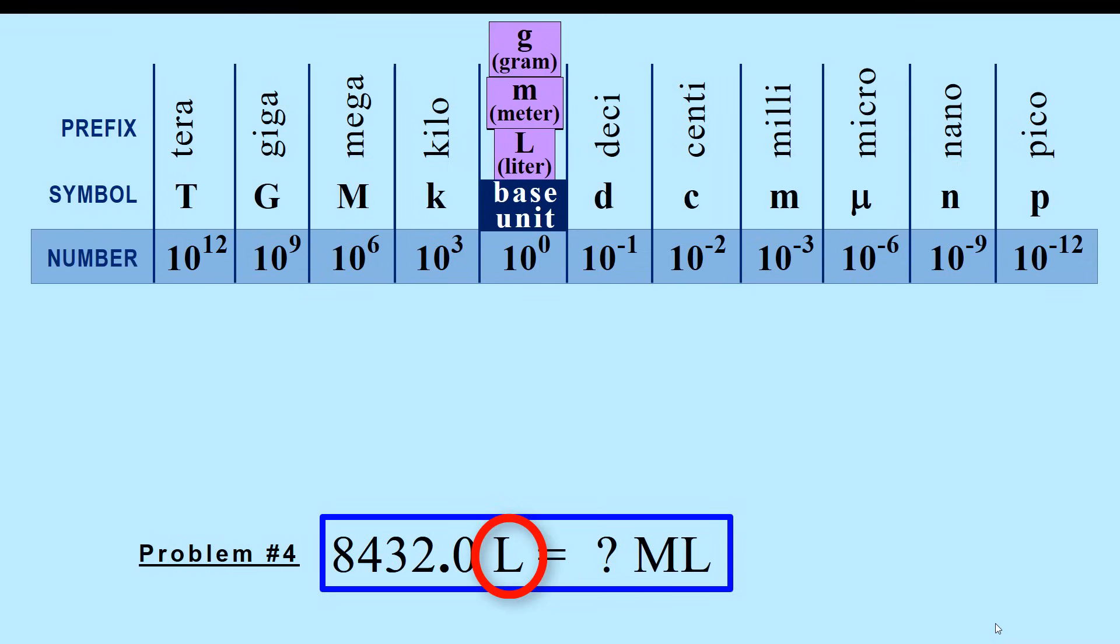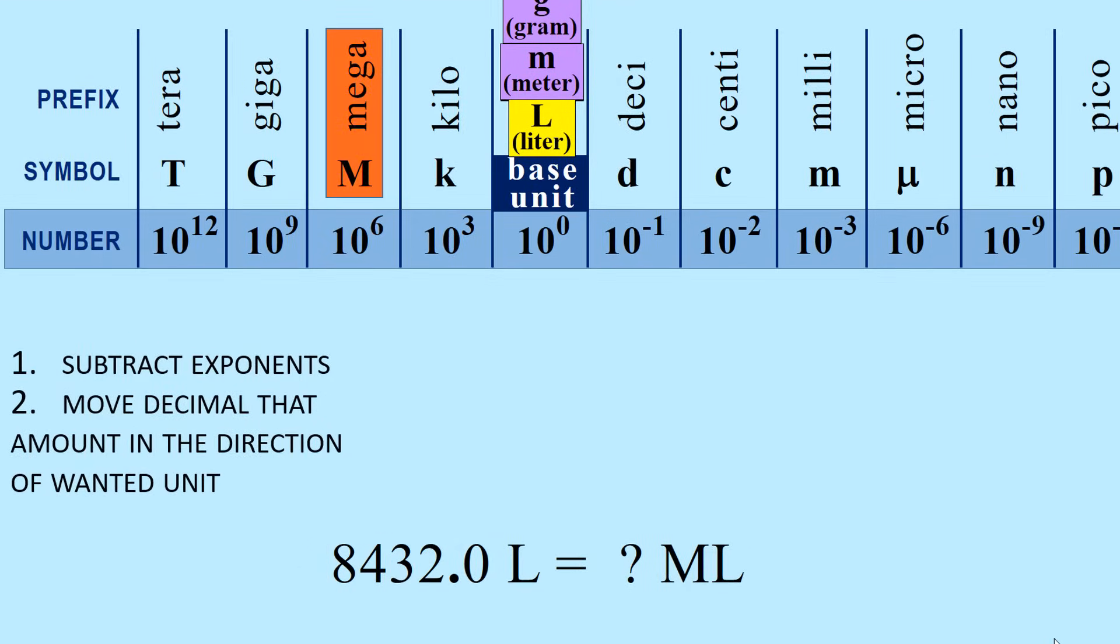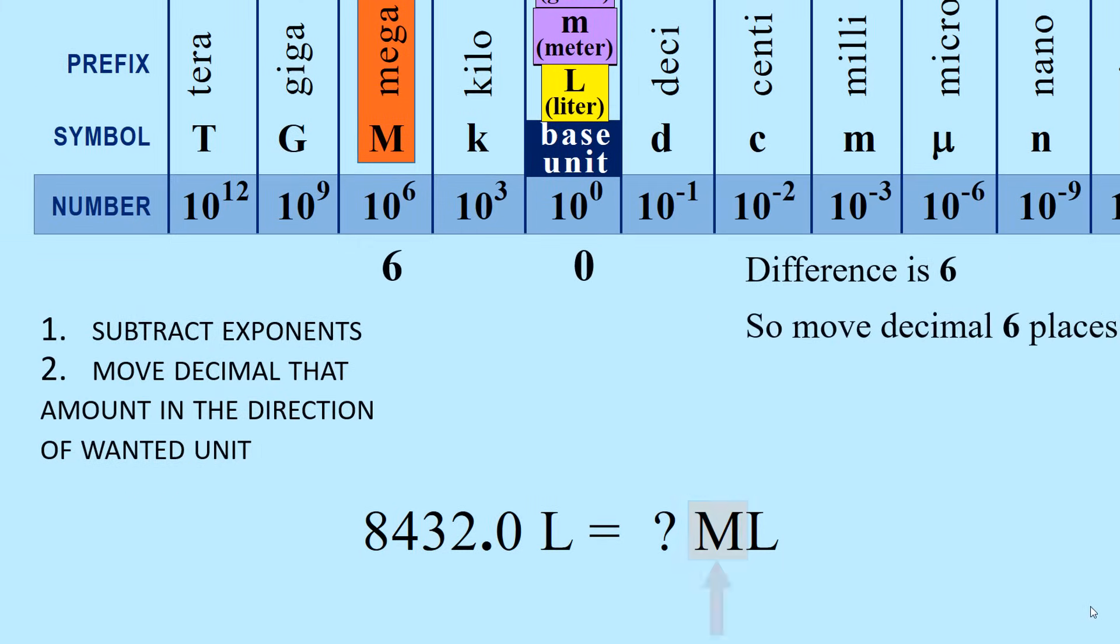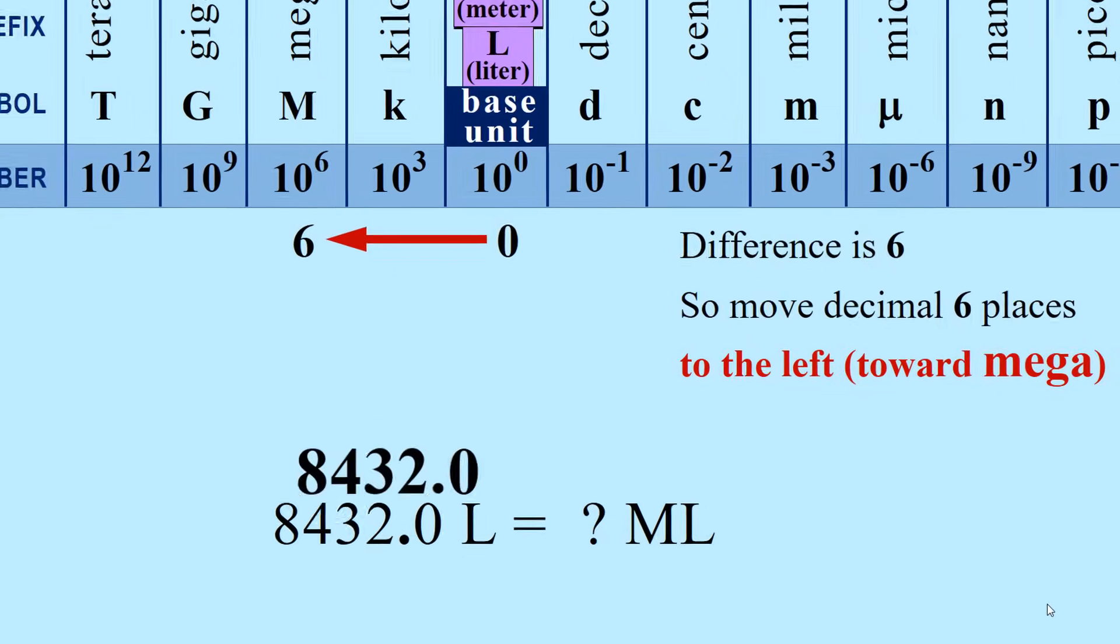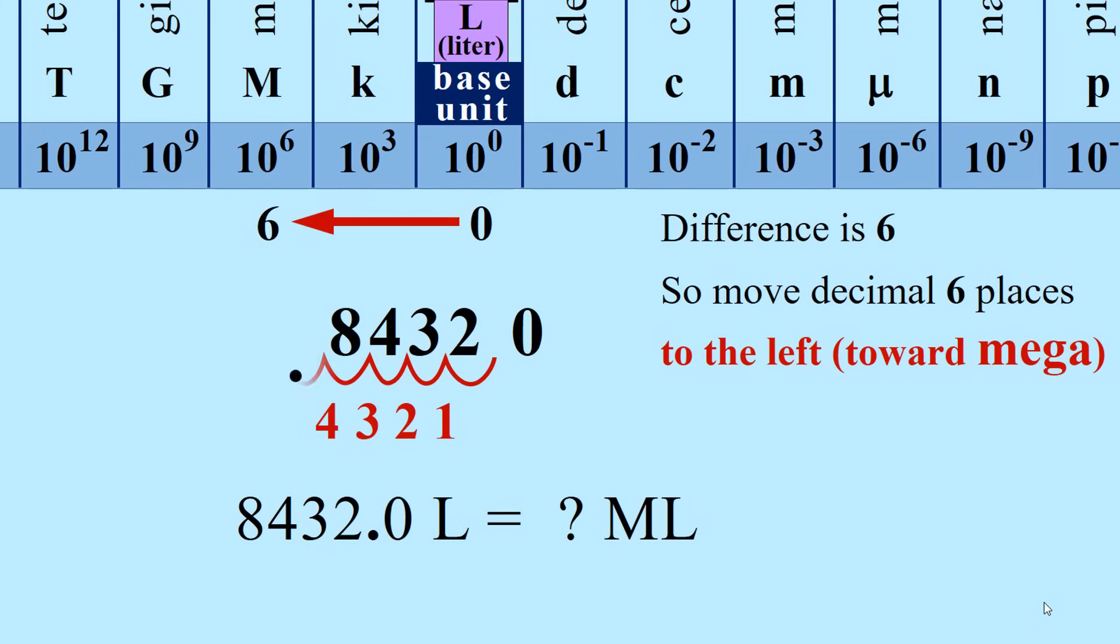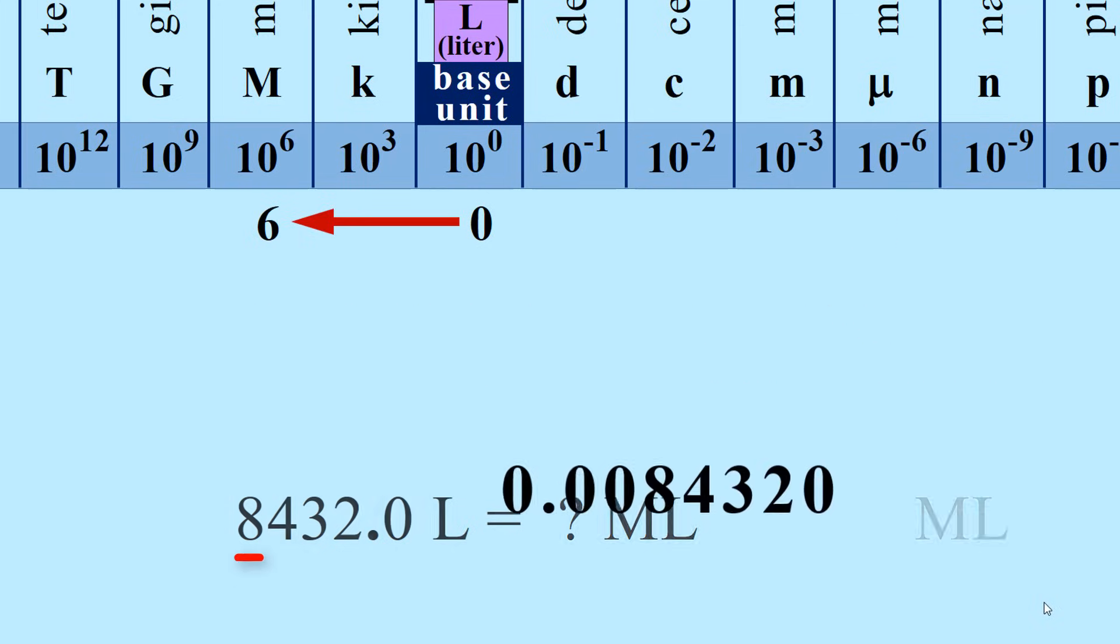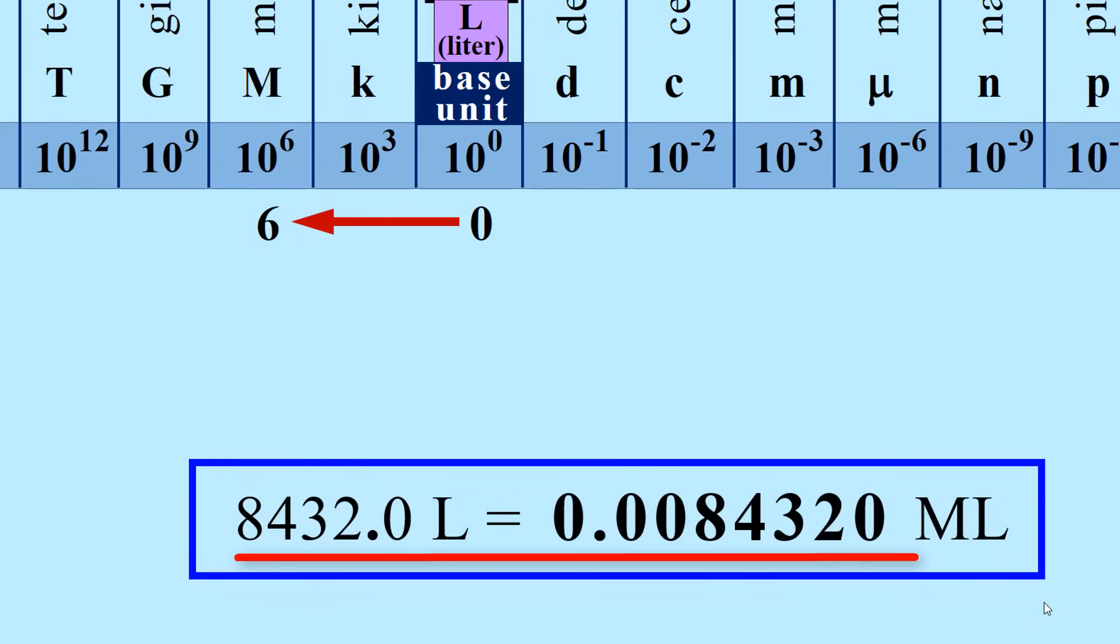Notice that the first symbol is by itself, so it is a base unit. So we want to start with the base unit liter and want to get to mega. Base units have an exponent of 0. Mega is 6. The difference is 6. Mega is the wanted unit, so the decimal is moved six places to the left toward mega. The decimal is moved six places to the left. Blanks are filled with zeros. By convention we add zero before the decimal. 8432.0 liters is equal to 0.0084320 megaliters.